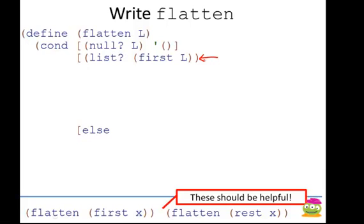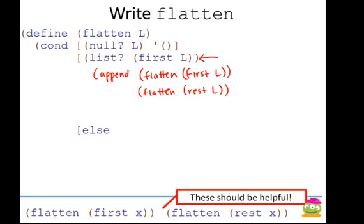If the first thing is a list, then I could call flatten on the first of L, which I know will be a list, and I could also call flatten on the rest of L, which I know is always a list. To combine those two things so as to result in a flat list, I can call append. Remember append takes two lists and makes them into one list.